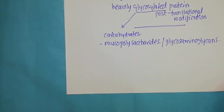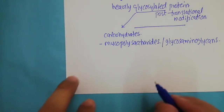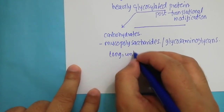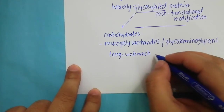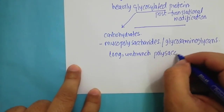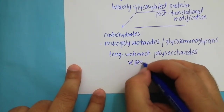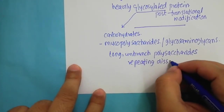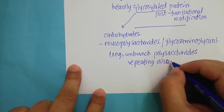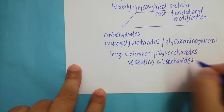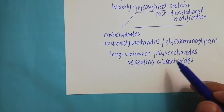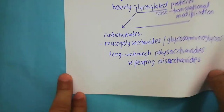These mucopolysaccharides or glycosaminoglycans are long and unbranched polysaccharides made up of repeating disaccharide units. This means that the single repeating unit of this long unbranched polysaccharide is a disaccharide unit. Let us discuss this disaccharide unit in a little bit of detail.